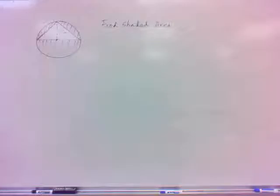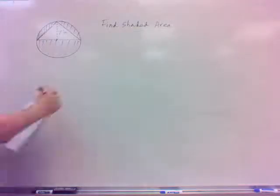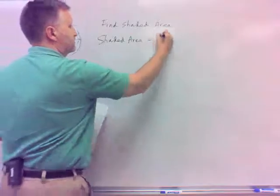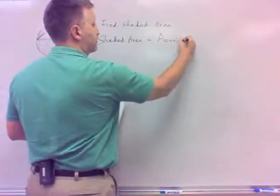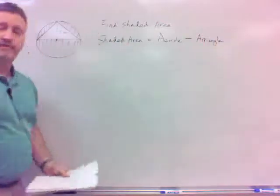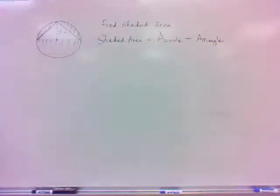One way I could do that is to think of it as what? A circle with a triangle cut out of it. So that shaded area, wouldn't it be the area of the circle minus the area of the triangle? I believe so. So if I can figure out my circle area and my triangle area, just subtract the two and this will get it done for me here.